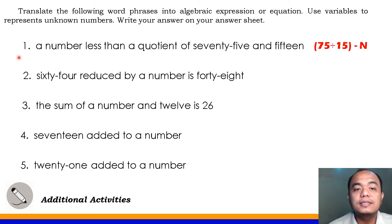Number 2, 64 reduced by a number is 48. Reduce is yes, subtraction. This is 64 minus N equals 48. Again, I used N here, you can use other letters in the alphabet to represent the number here. Number 3, the sum of a number and 12 is 26. Very good, N plus 12 equals 26. Number 4, 17 added to a number. Correct, that's 17 plus N.